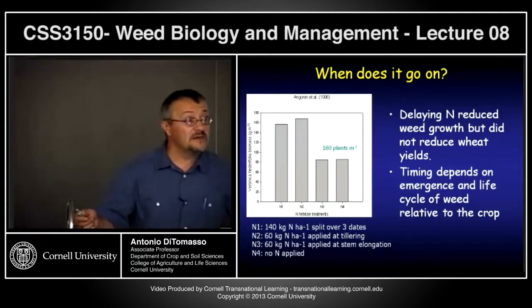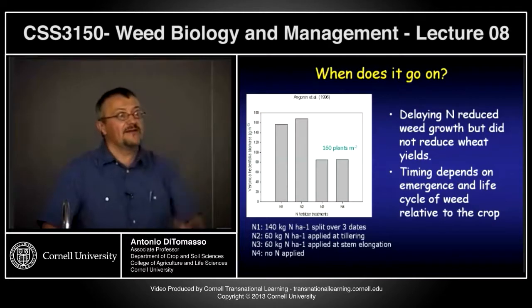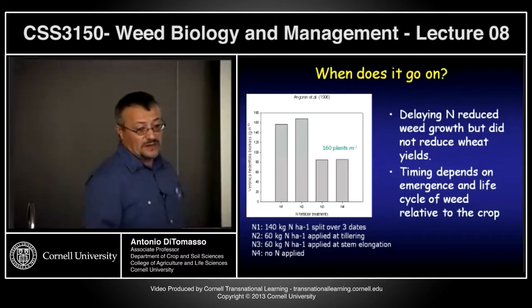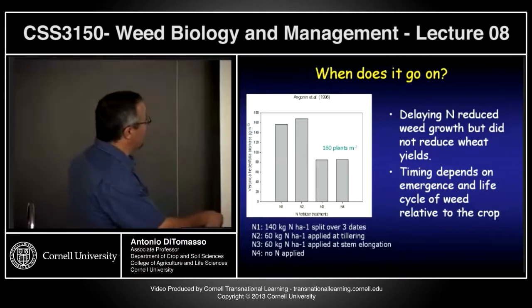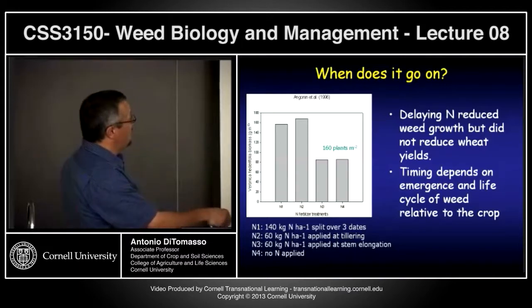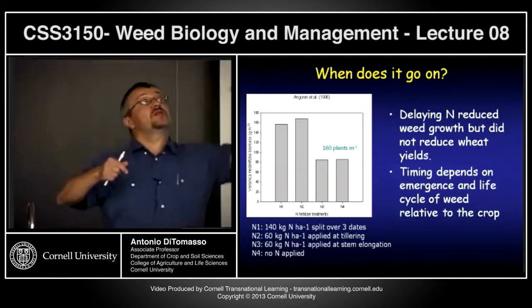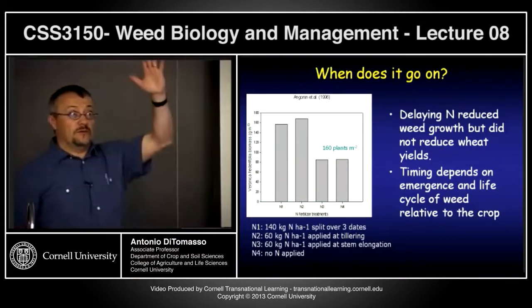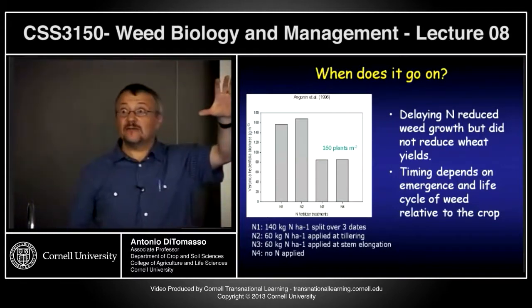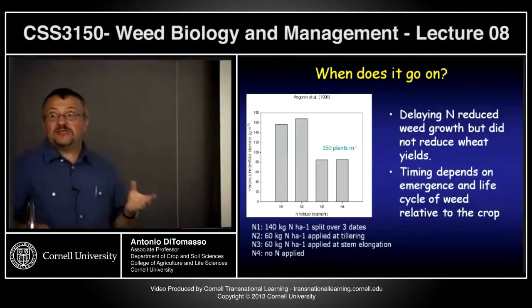Very often, split applications are much better from a weed perspective. From a management perspective it's a pain because you have to make multiple trips, but from a weed perspective that's the way to go. Delaying application reduced weed growth but did not reduce crop yield in this study. The more you delayed — applying at stem elongation — the more it dropped the weeds down while still helping your wheat. You really need to know what weed species you're dealing with.